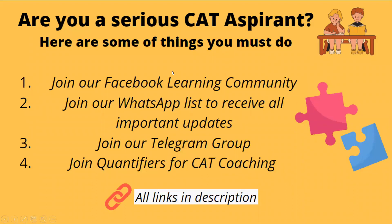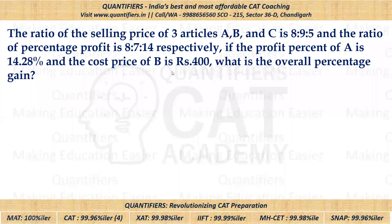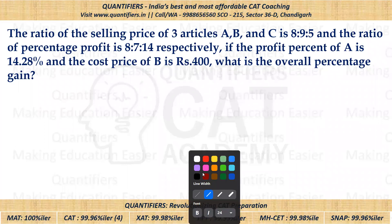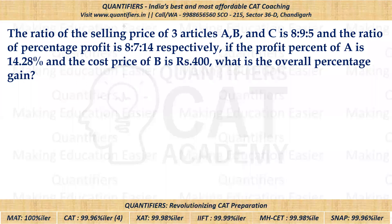I hope all of you have tried it. So first of all, let us see what is given in the question. The ratio of selling price of three articles A, B, and C is given, which is 8 : 9 : 5.